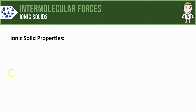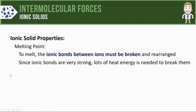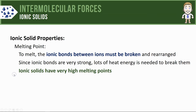Let's now take a look at some ionic solid properties, starting with melting point. If you wanted to melt an ionic solid, you'd have to take the ionic bonds between the ions and start to break them. Since ionic bonds are extremely strong, lots of heat energy is going to be needed to do this, and for that reason ionic solids tend to have very high melting points.